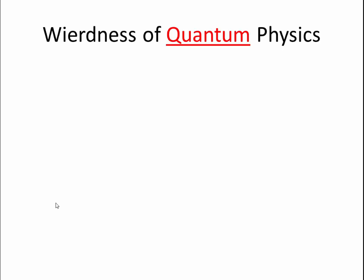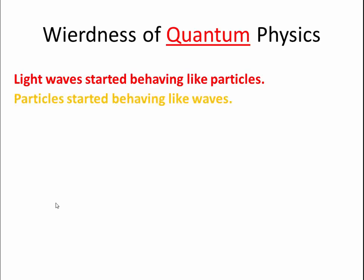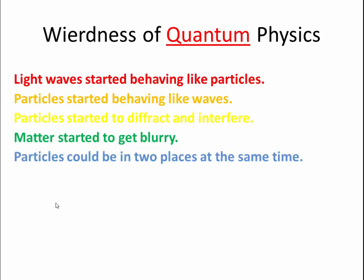To show you how weird this is going to get in quantum physics, which is a high-level topic. First of all, we find out that light waves, which were waves, start behaving like particles. We also find out that particles, like electrons, start behaving like waves. Which means that electrons, for example, can start to diffract and start to interfere with each other, forming interference patterns. Also, matter, which we consider to be finite and well-defined, starts to get a bit blurry. There's a bit of uncertainty as to where it starts or where it ends.